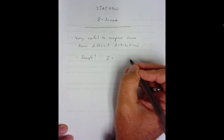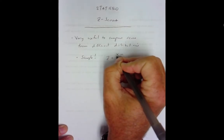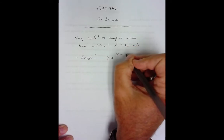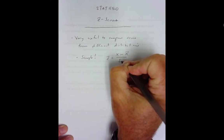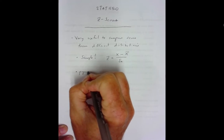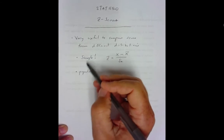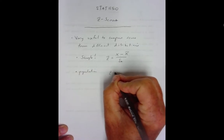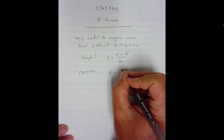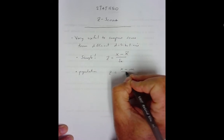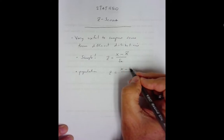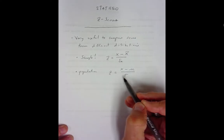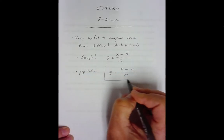We take x — the score we're trying to find the z-score of, whether it's a gestation period, an ACT score, a GRE, or any measurement — minus the mean, divided by the standard deviation. When we move from a sample to a population, the notation for the mean changes from x-bar to mu, and the standard deviation becomes sigma, the population standard deviation.